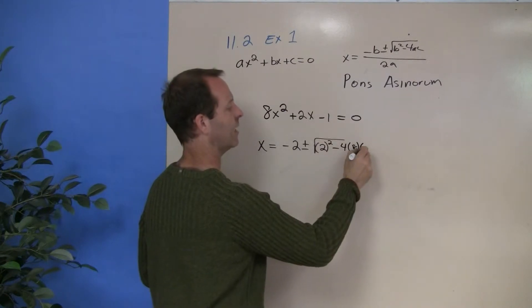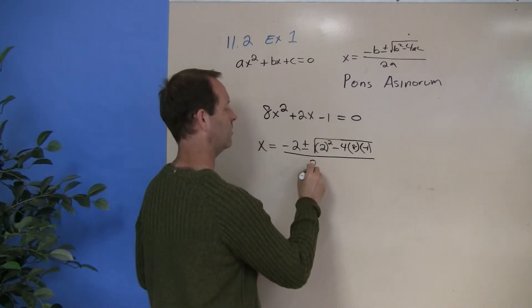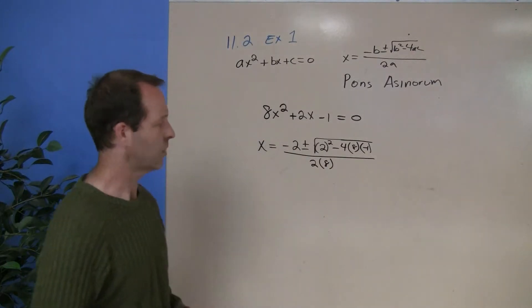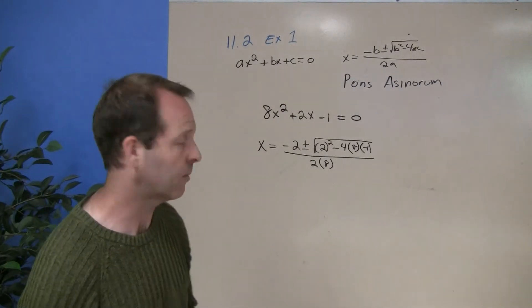Times my C, which is negative 1, all over 2 times my A, which is my 8. So those coefficients, if I plug them into the correct spots, I'm on my way to solving this problem correctly.